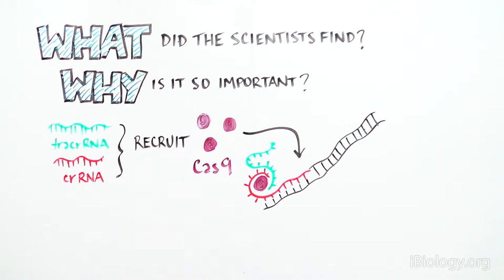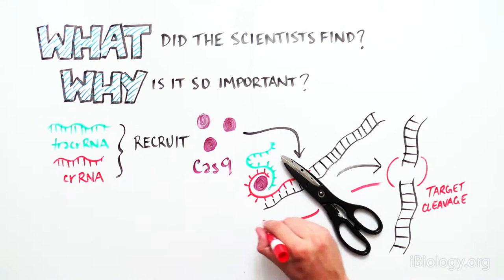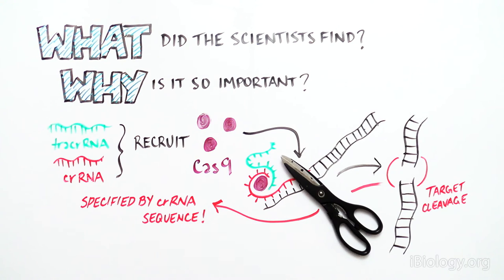Once at the proper DNA site, Cas9 cleaves both DNA strands. This cleavage occurs at a very specific and conserved position that is dictated by the sequence in the red CRISPR-RNA molecule.